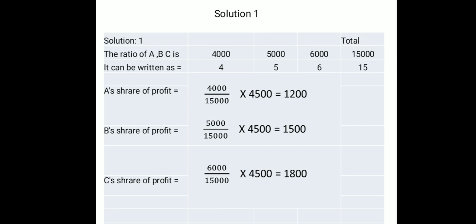Solution: The investments of partners A, B, and C are 4000, 5000, and 6000. You can divide all numbers by 1000 — there is no change in value when you divide or multiply all the capitals by the same number. So the investments simplify to the ratio 4 : 5 : 6, and the total is 15.